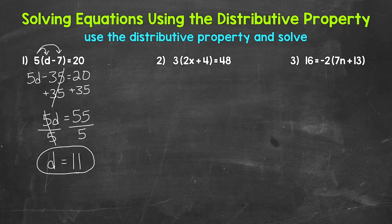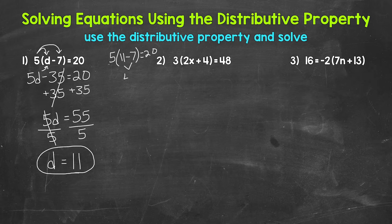We can check to see if we are correct by plugging in 11 for d. So we have 11 minus 7 in parentheses — that gives us 4. Then we have 5 times 4, which is 20. So we are correct. d equals 11.